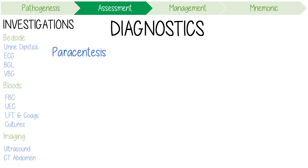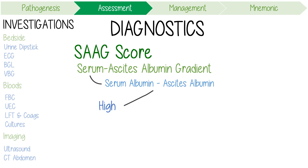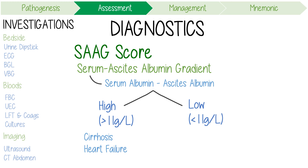One key concept is the SAAG score. The serum ascites albumin gradient should be considered for a first episode of ascites and is simply the difference between the serum albumin concentration and the ascites albumin concentration. A high SAAG above 11 g/L means there is a large difference between the two, occurring when hydrostatic pressure is high due to portal hypertension from cirrhosis or heart failure. A low SAAG means the albumin levels are similar, which occurs in malignancy and secondary peritonitis.